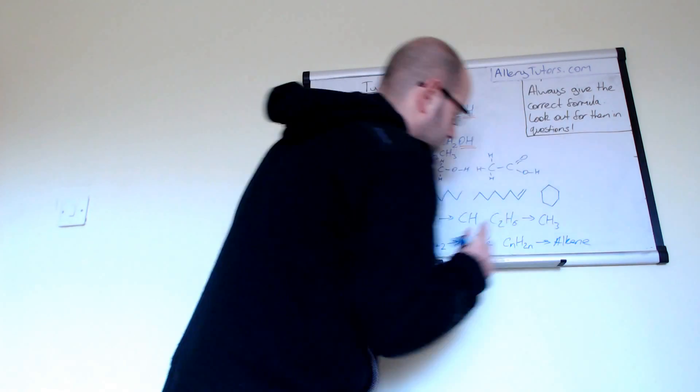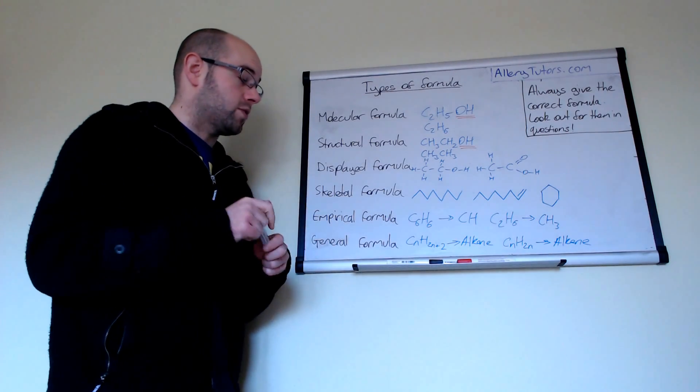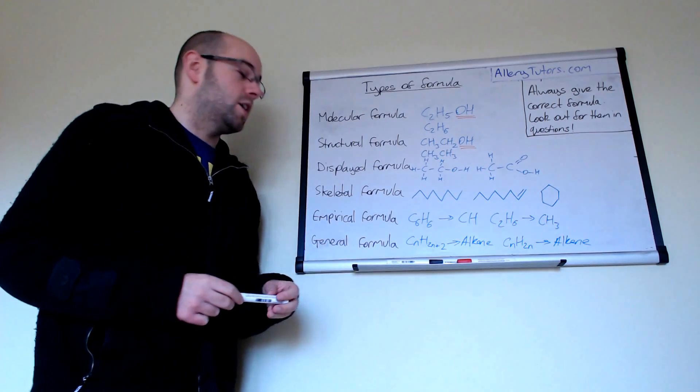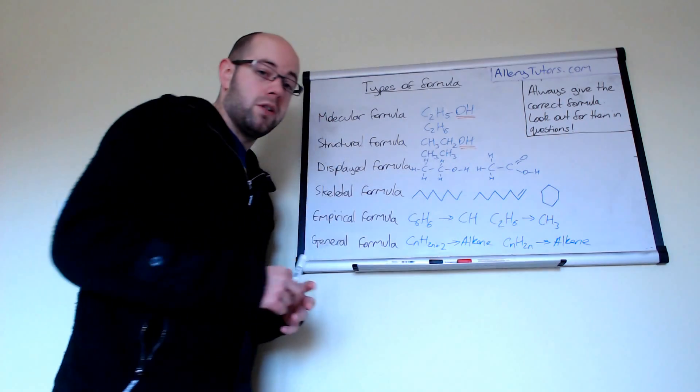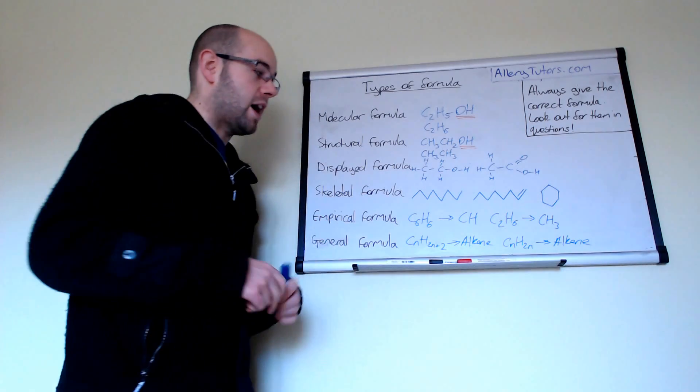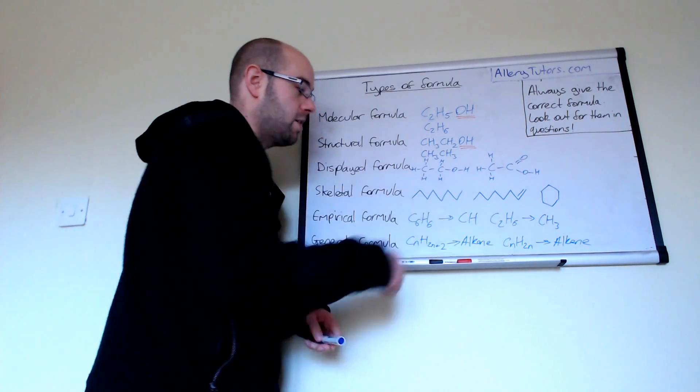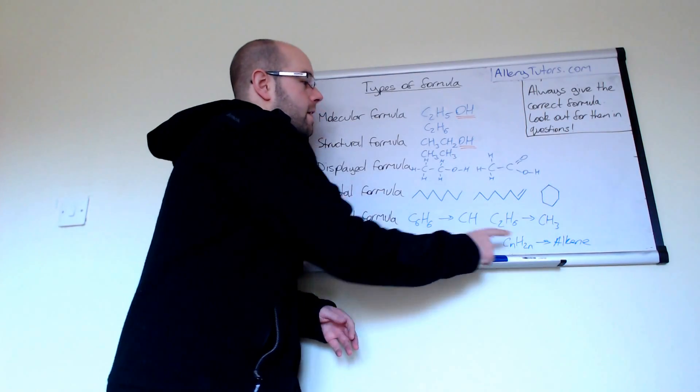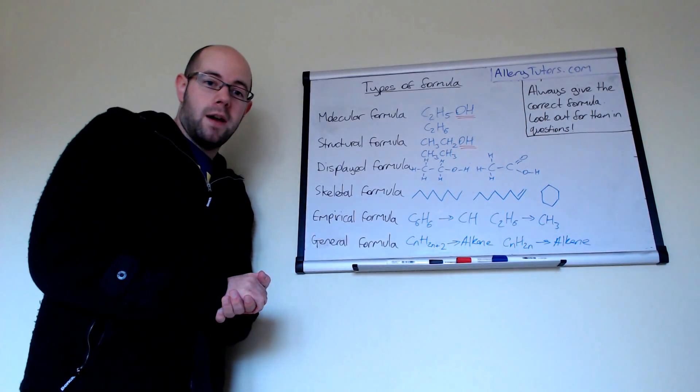You can see it's just an algebraic way of showing it and it's useful because it means you can put in C150 in there if you like and you know that an alkene with 150 carbons when it has one double bond would actually have 300 hydrogens on there.